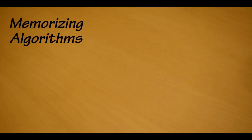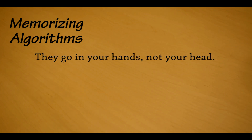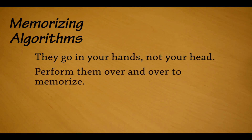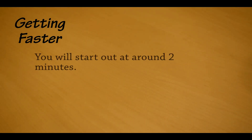Here are some final tips on memorizing algorithms. Many people say the algorithms will never go into their head and it's too much work. The algorithms shouldn't go into your head — they go into your muscle memory. To memorize them, rather than repeating them in your head, perform them over and over on a cube. Also, three of the last layer algorithms use R U R' U' inside them, which makes memorizing those algorithms a lot easier. When starting out with this method, you should find yourself averaging around two minutes. With some practice, you should be able to average under a minute.